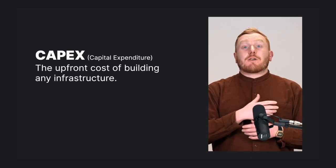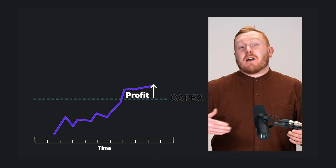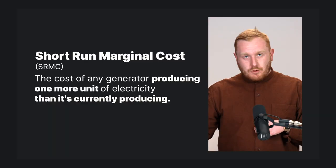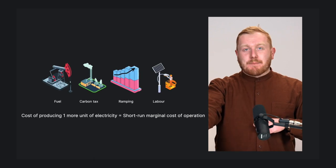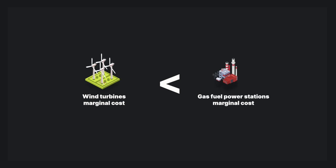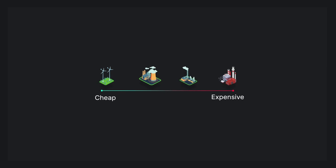Hi guys, Neil here again with the final episode in series two of the Energy Academy. Let me run through all the topics covered. First, all generators cost money to build — this cost is known as CAPEX, short for Capital Expenditure, and it has to be taken into account when trying to figure out the viability of a given project. Second, all generators cost money to run — this is called the short run marginal cost, and it includes things like fuel prices, carbon emission taxes, and the cost of ramping up. Wind, for example, has almost no short run marginal cost, as it requires no fuel and emits no carbon. Coal and gas powered generators have a higher short run marginal cost because of the fuel and the carbon emissions. In the electricity market, the cheapest forms of generation are used first and the most expensive are used last — this is known as the merit order.